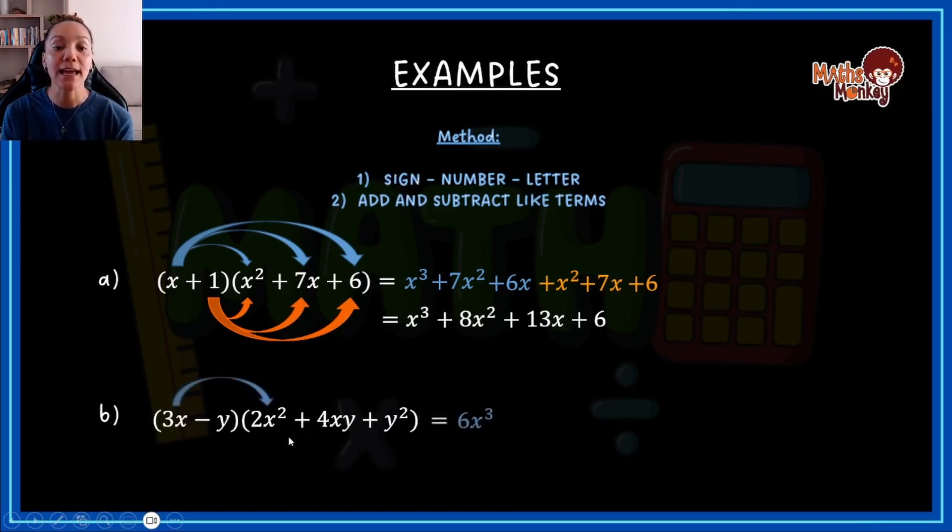So if I say 3x times x squared, I go, what is the sign? Positive times positive gives me positive. The numbers, 3 times 2 gives me 6. The variables, x times x squared gives me x to the power of 3.